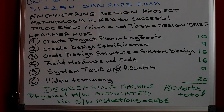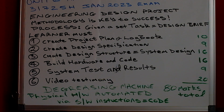Once we have a written plan to focus the learner on exactly what tasks need to be achieved and in what order, we then create a design specification, which is Activity 2, for 9 marks. The design specification breaks down the design brief so that the learner can understand exactly what needs to be produced. It includes details about hardware, details about software, and details about the system operation.